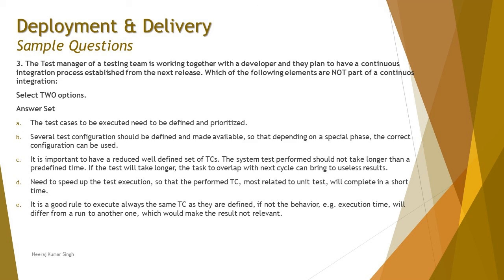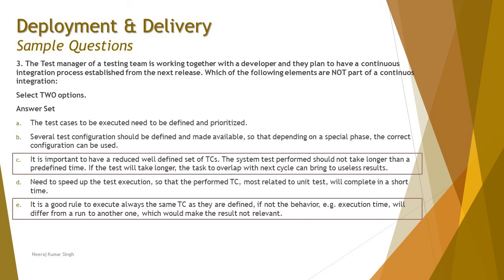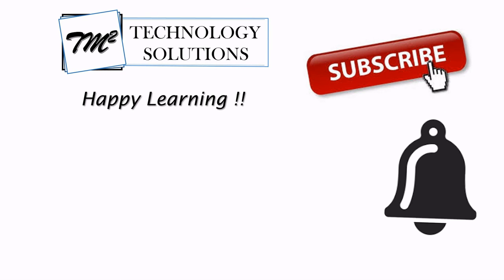The right answers are C and E — C incorrectly claims a predefined timeline is needed, and E incorrectly claims test cases should never change. So the two elements NOT part of continuous integration are C and E. That's all from this tutorial. Hope you understood what kind of questions can appear from chapter 4. Drop a comment below for any queries. Till then, keep learning, keep exploring, and happy learning!